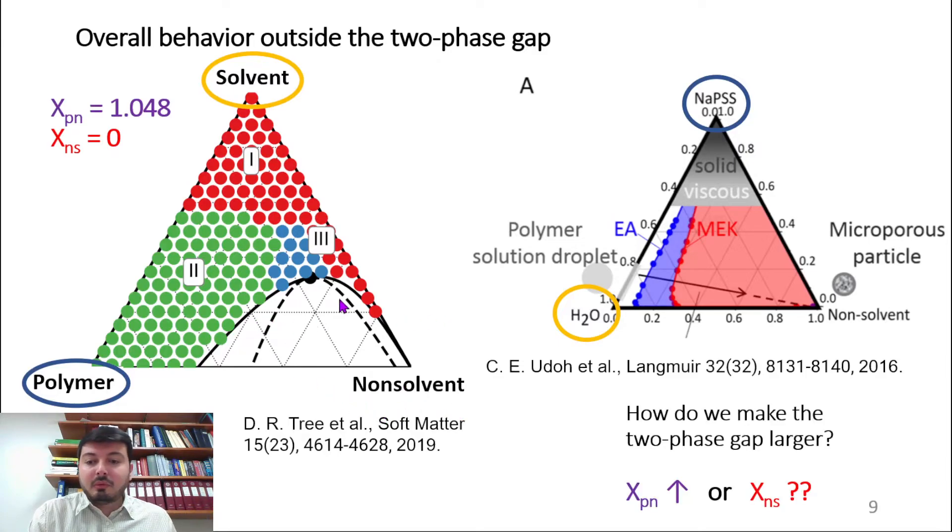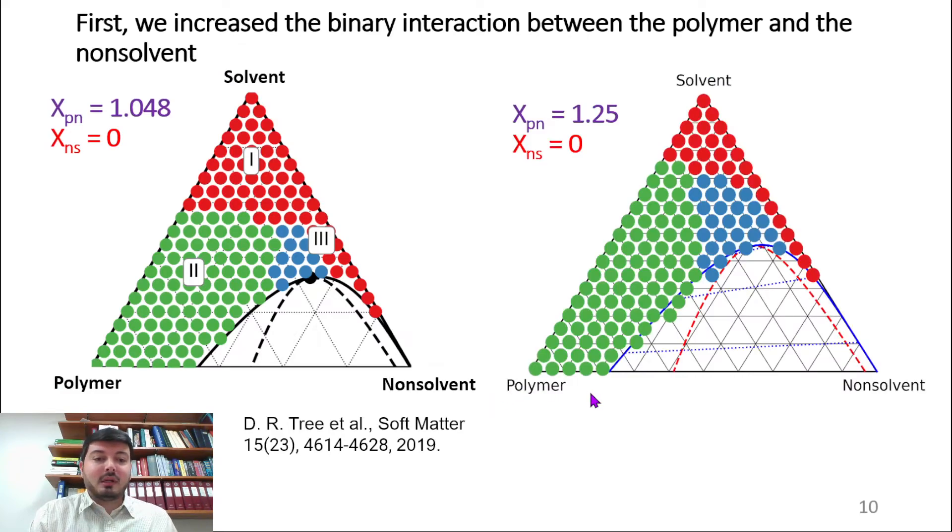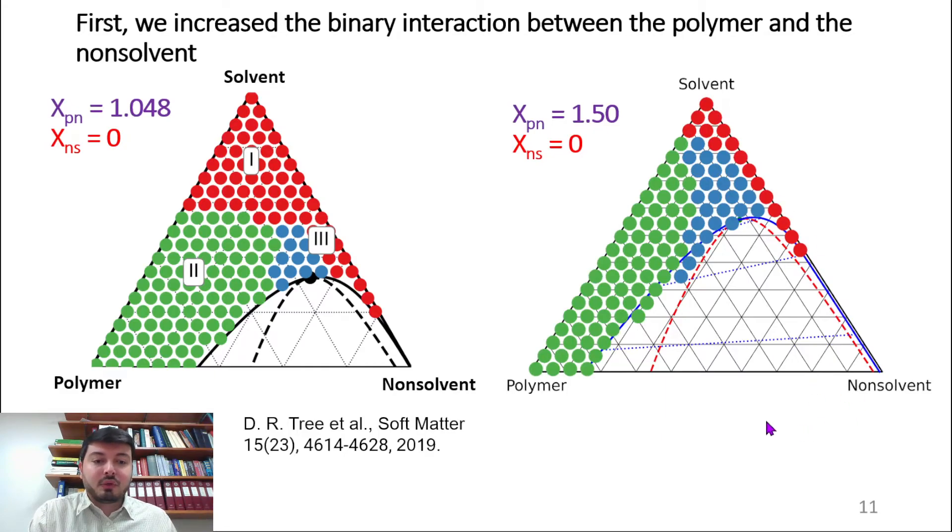Another way would be to have some interaction between the two solvents, because we can see here there might be some immiscibility between the two solvents. First we started with increasing the binary interaction between the polymer and the non-solvent. As you see here, when you increase it, the phase gap increases and regime 3 also significantly increases, which means you have higher potential of having spinodal decomposition and forming pores in particles. This trend keeps going as you increase χpn.